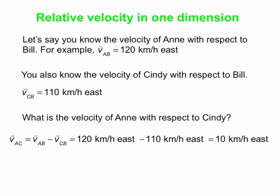We take Ann's velocity with respect to Bill (120 kilometers per hour east), subtract off Cindy's velocity with respect to Bill (110 kilometers per hour east), and we're left with 10 kilometers per hour east. So according to Cindy, she sees Ann traveling faster to the east than she is — Ann is going 10 kilometers per hour further east than Cindy sees herself going.